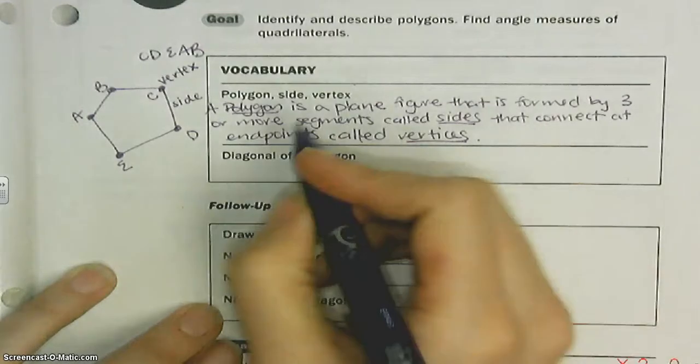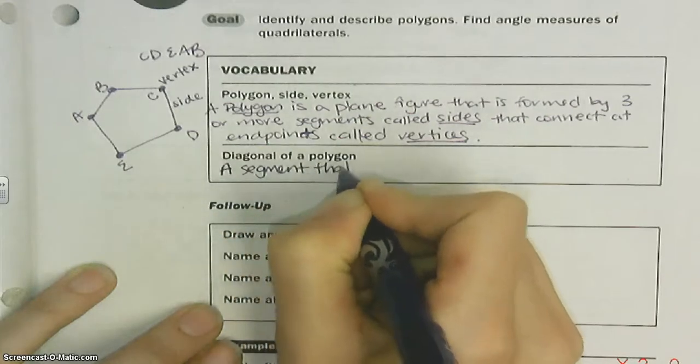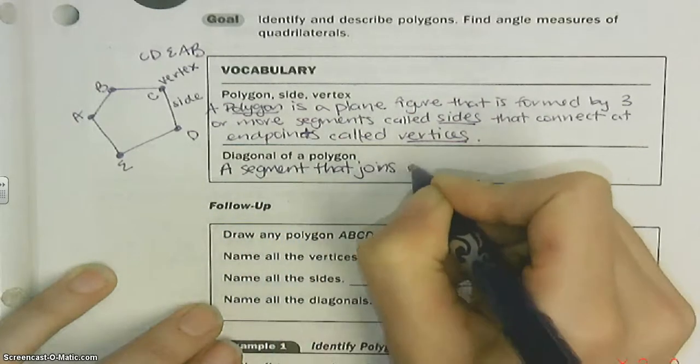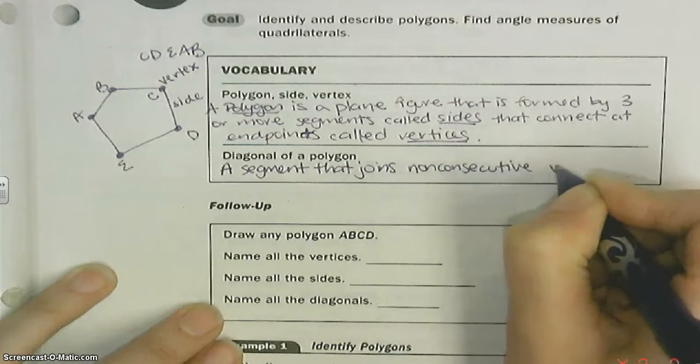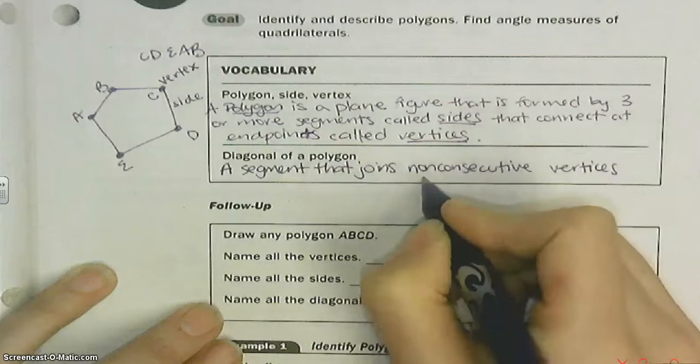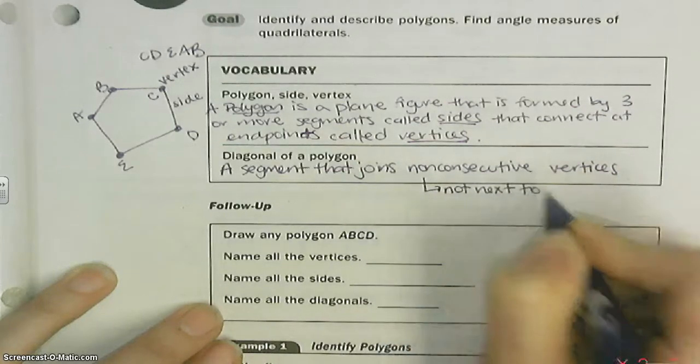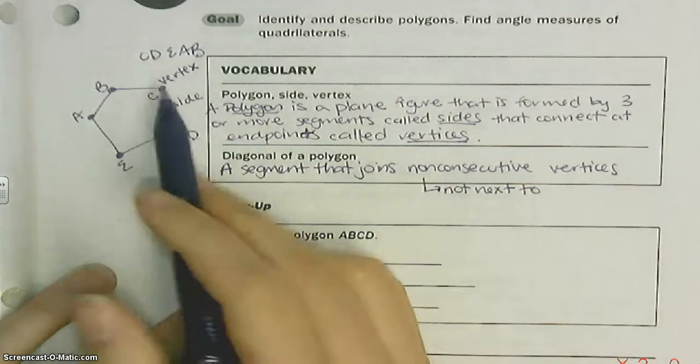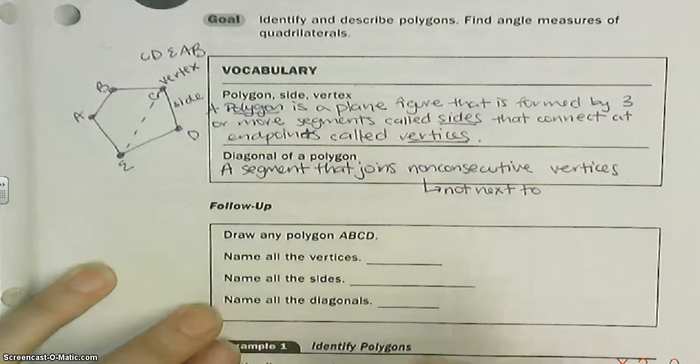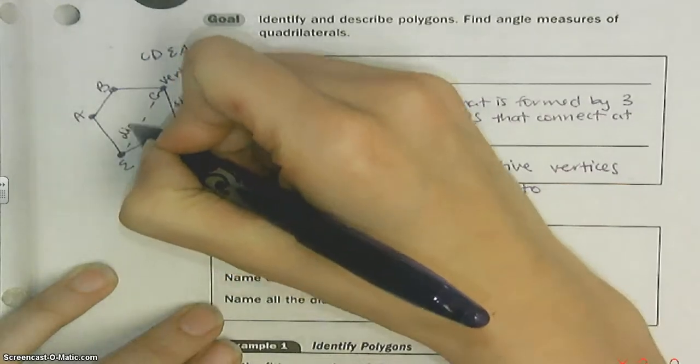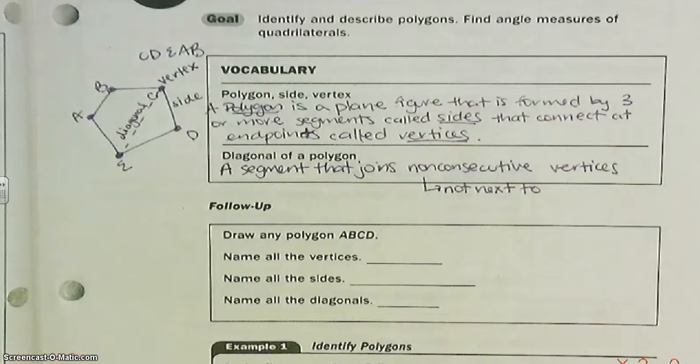The diagonal is a segment that joins non-consecutive vertices. So non-consecutive means not next to. So you pick two vertices that are not next to each other, like C and E, and you connect them. That is a diagonal—a segment that joins non-consecutive vertices.